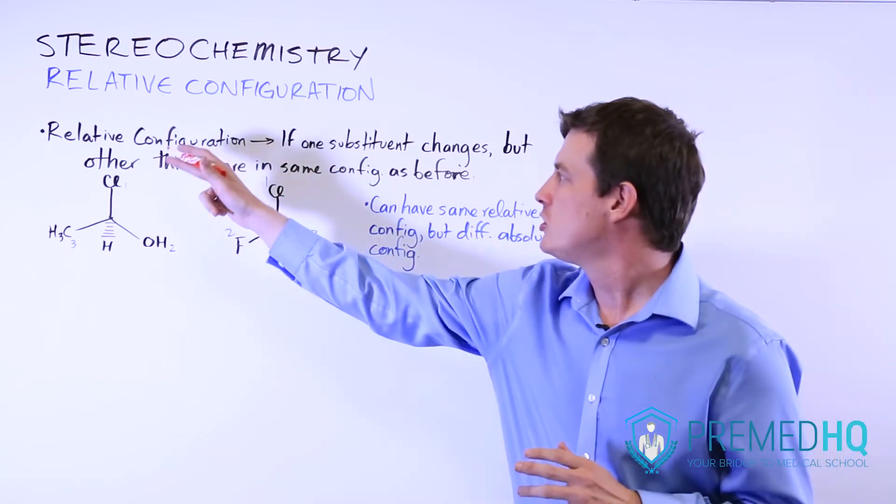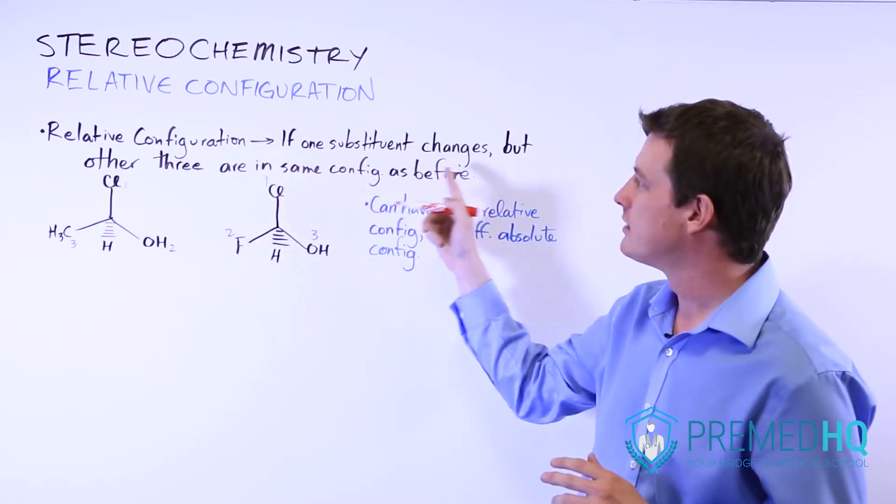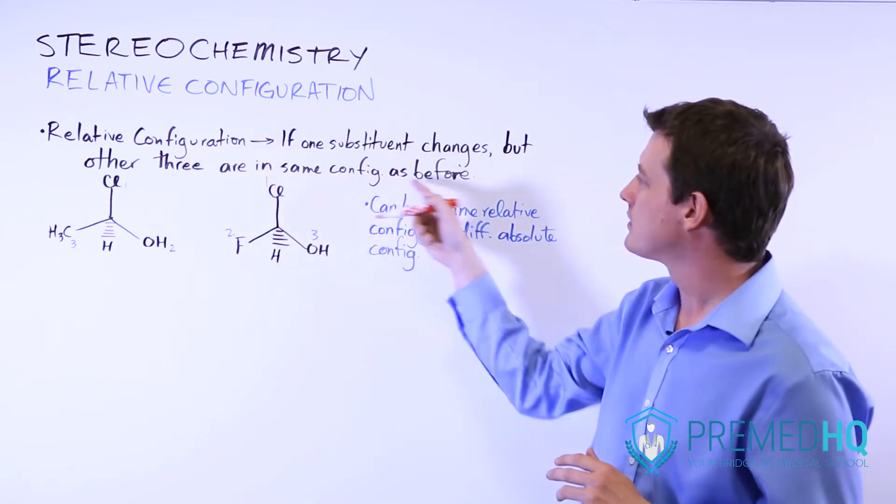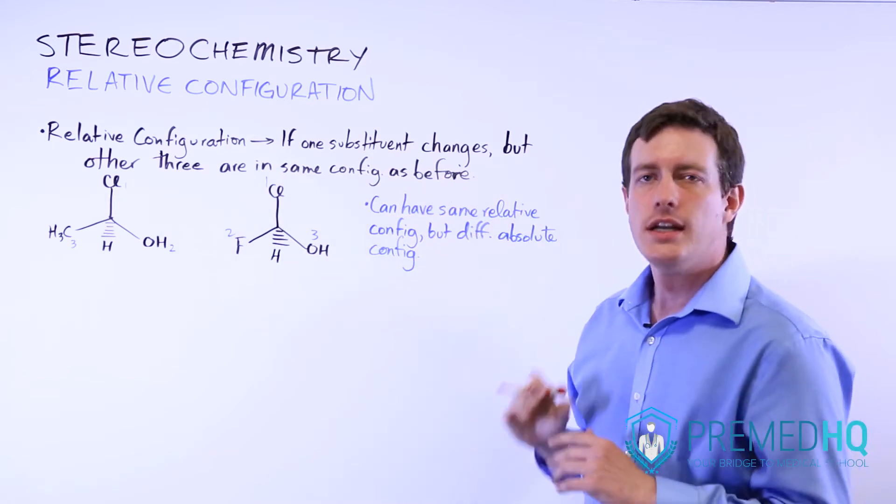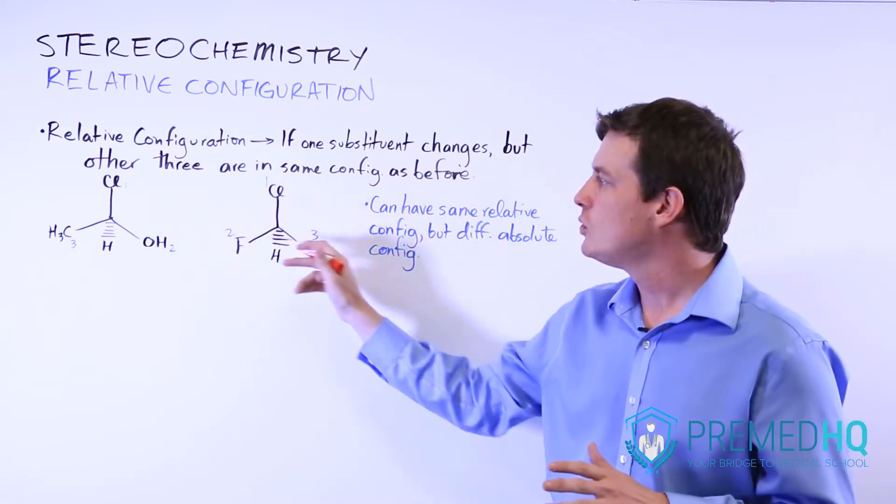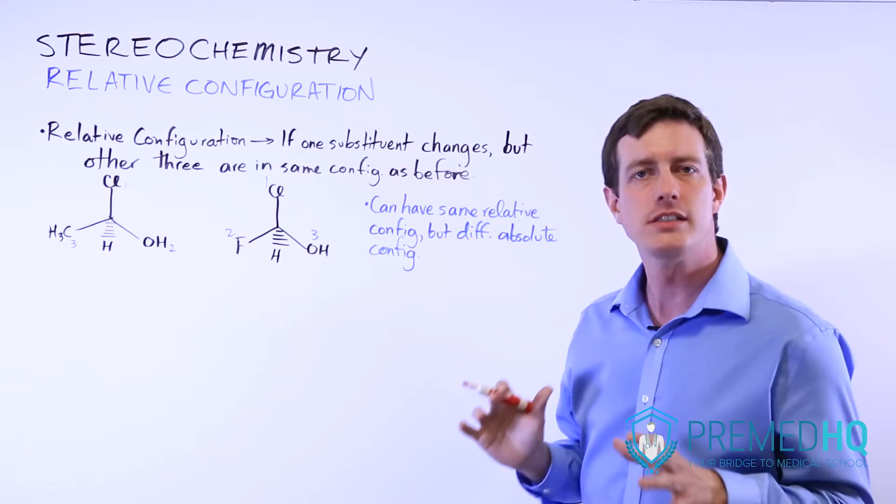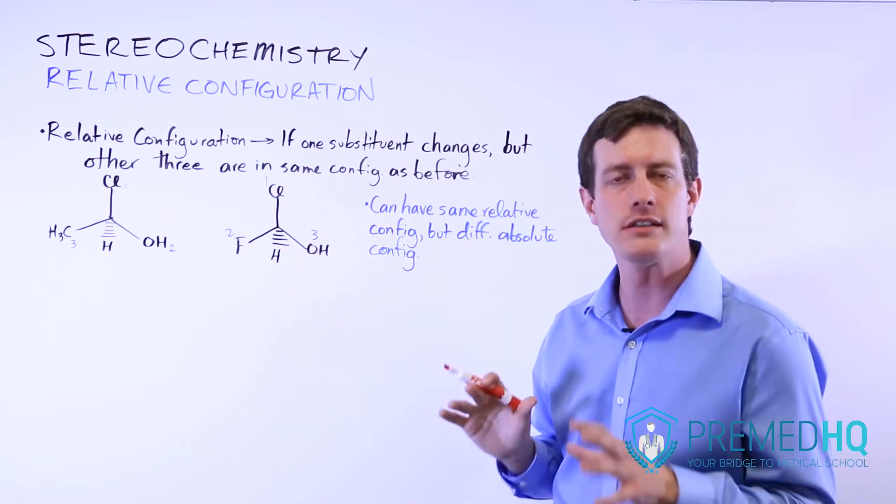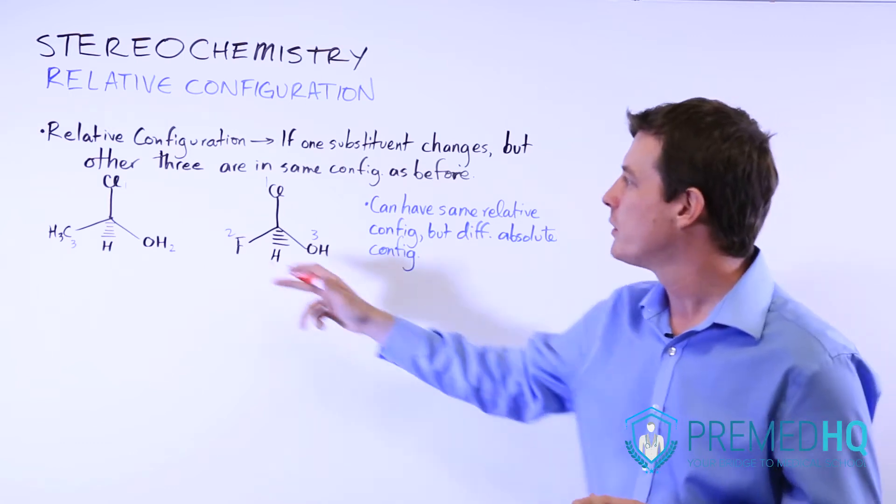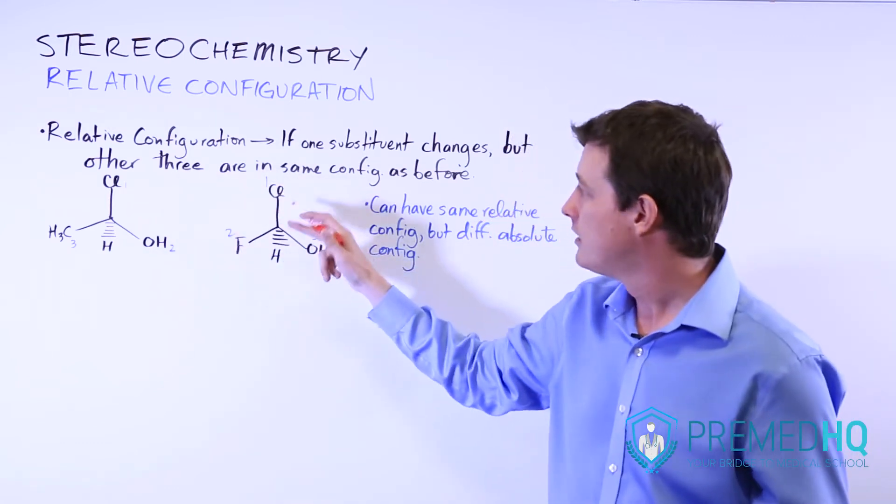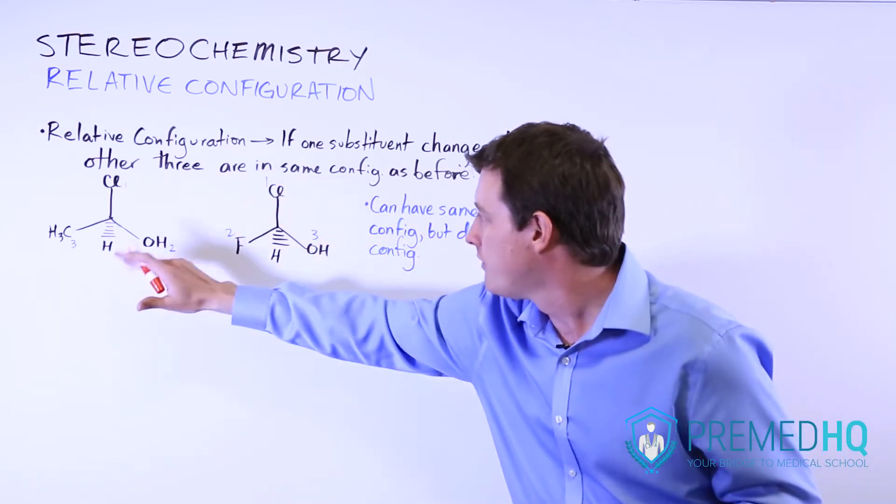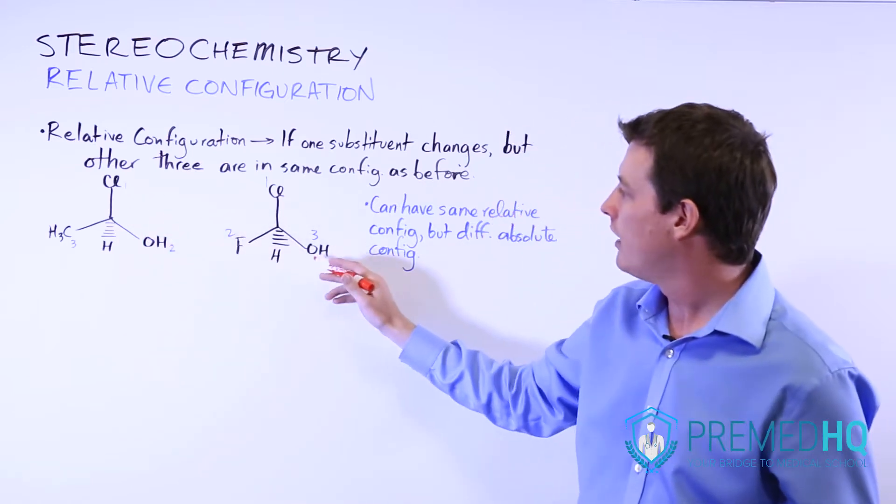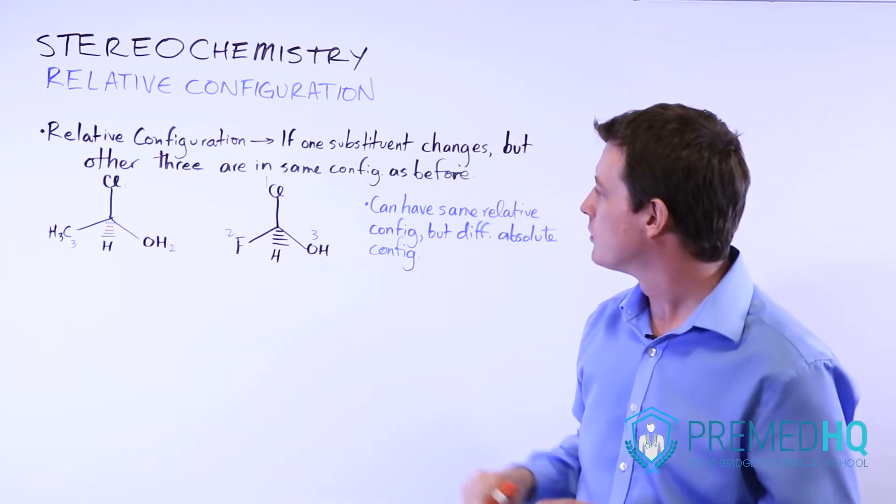What happens is if you change one substituent, but the other three remain in the same configuration as before, then that means that these two things are in the same relative configuration, meaning that the three remaining substituents are all in the same positions. So here we have a chlorine there, we have a hydrogen facing away from you, and we have an OH hydroxyl group there.